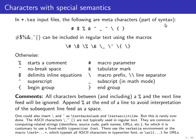In every language there are also characters with special semantics — meta characters which are part of the syntax. Using these in text triggers some function rather than just outputting the character. These are: the number sign, dollar sign, percent, ampersand, tilde, underscore, circumflex, backslash, and the opening and closing brace. Many of these can be included in normal text by simply putting a backslash in front — there is a single-symbol macro of the same name that just outputs them.